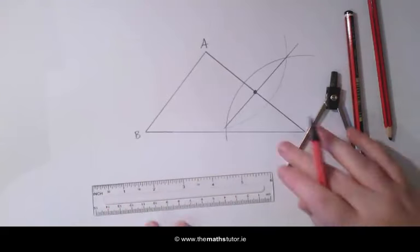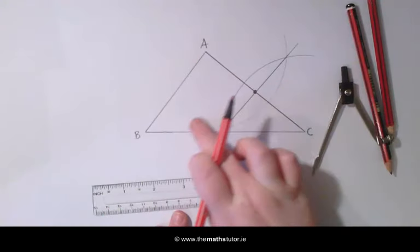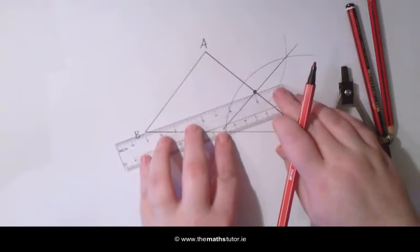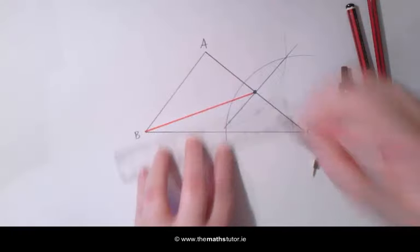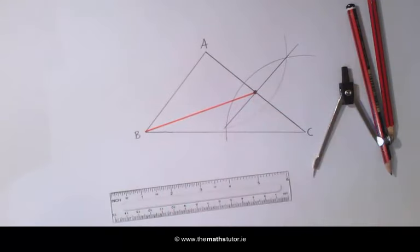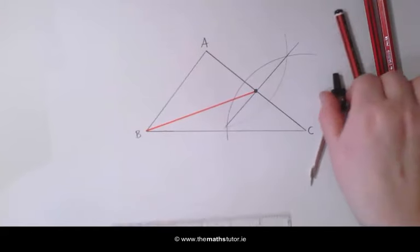We are going to join this midpoint to the opposite vertex. This line is called the median. We are now going to do this to another side of the triangle.